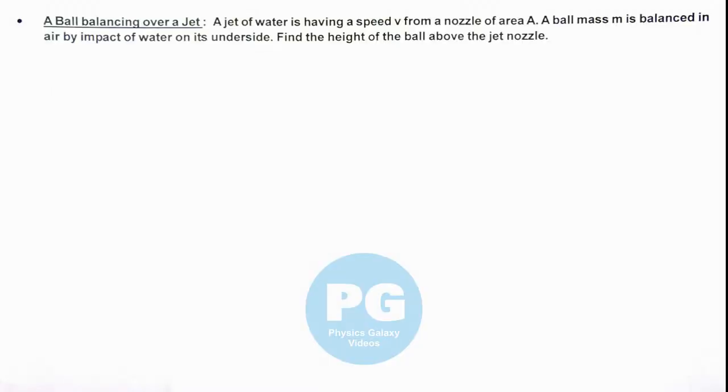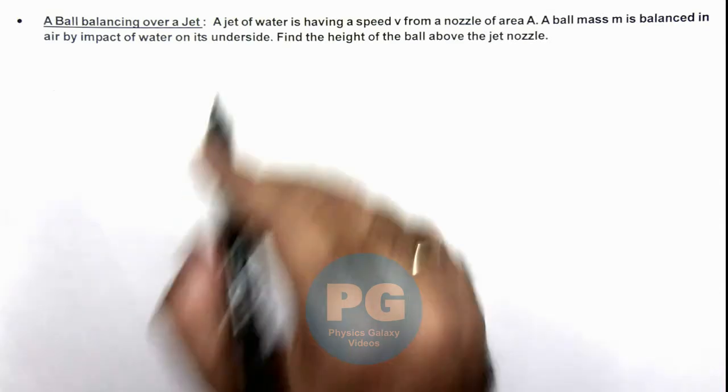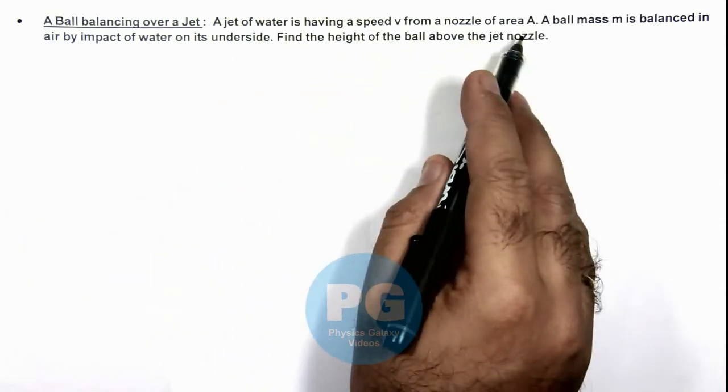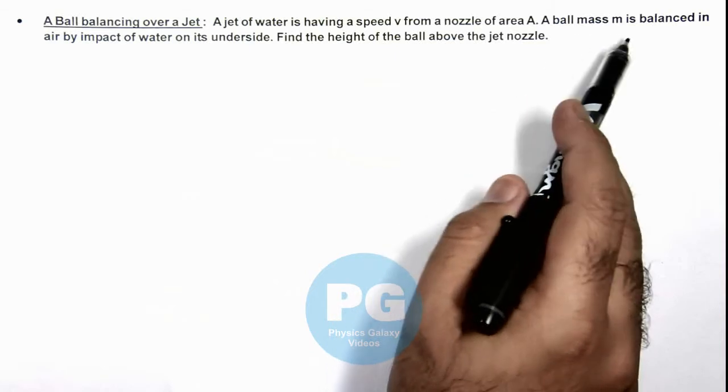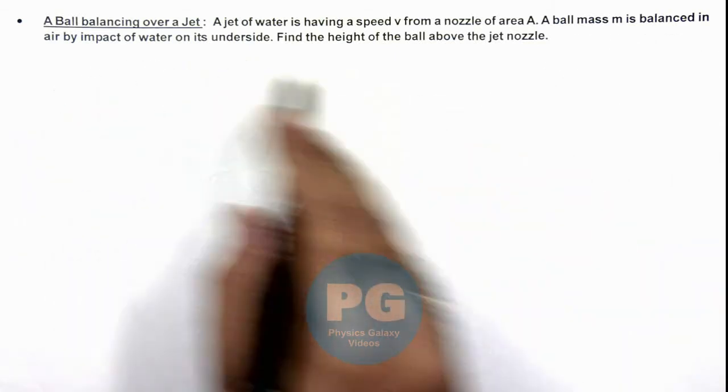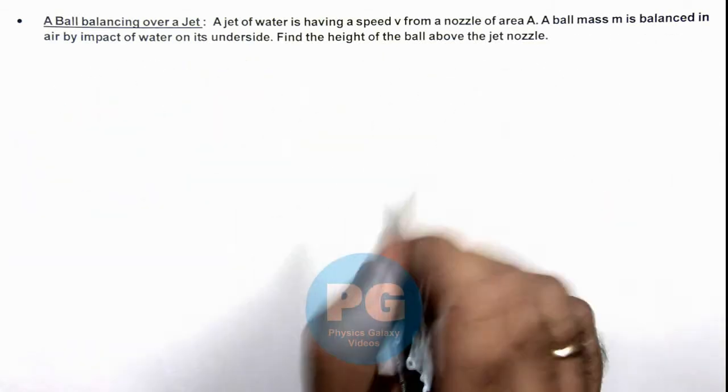In this illustration we'll be analyzing a ball balancing over a jet. We are given that a jet of water is having a speed v from a nozzle of area A. A ball of mass m is balanced in air by impact of water on its underside. We are required to find the height of the ball above the jet nozzle.